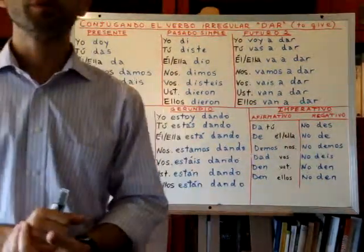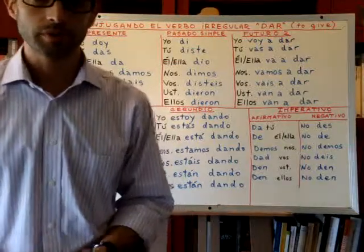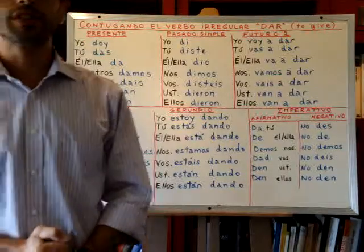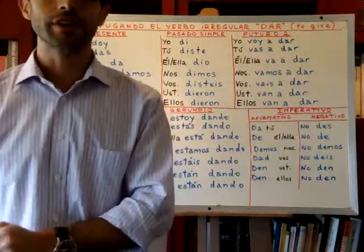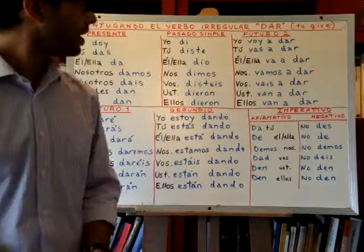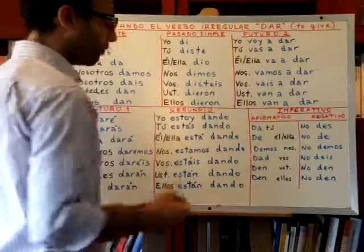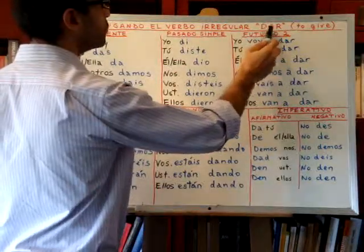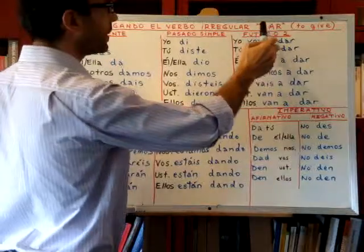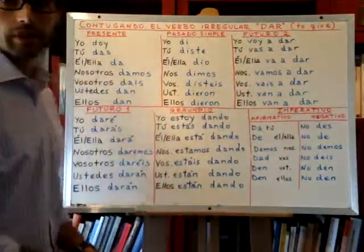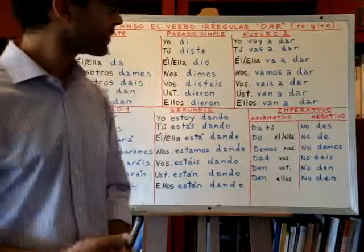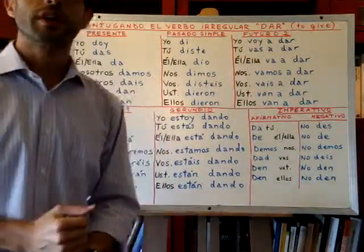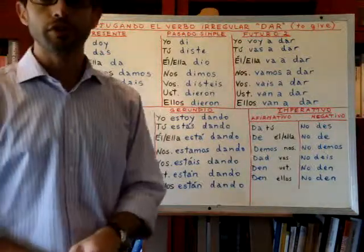Hi there! Today we will learn another irregular verb — the verb dar. Dar means 'to give,' so you can see it is a very important verb, same as 'give' is in English. If we separate the root from the ending of the verb, the root would be the letter D and the ending AR, which makes it belong to the first group of verbs. With such a short root, it's quite obvious that this verb becomes irregular.